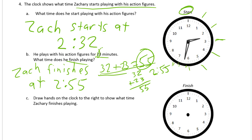Draw hands on the clock to show 2:55. It's almost three o'clock, so the hour hand points almost at the three, between the two and the three. For the minute hand at 55: five, ten, fifteen, twenty, twenty-five, thirty, thirty-five, forty, forty-five, fifty — on the eleven — fifty-five. There's 2:55. Now label the first and last tick marks on the number line with two o'clock PM and three o'clock PM.